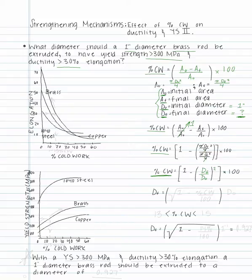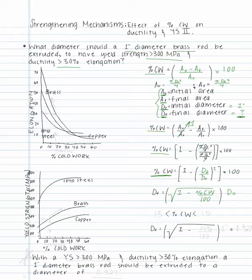Since we are looking for the final diameter, we will solve for d-sub-f in this equation, which gives us the square root of (1 minus percent cold work over 100), multiplied by d-naught. Now that we have the equation to solve for the final diameter, we need to use the given plots to find a percent cold work that corresponds to a yield strength greater than 300 megapascals and ductility greater than 30% elongation.